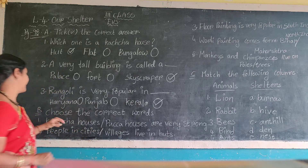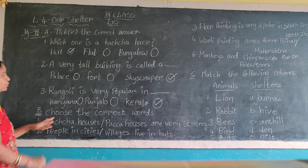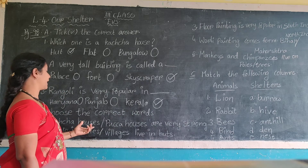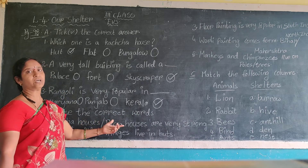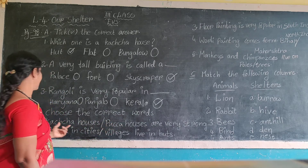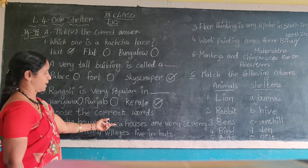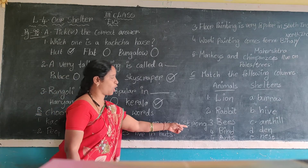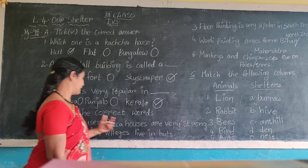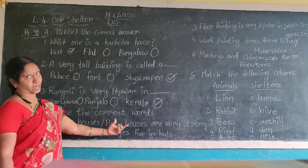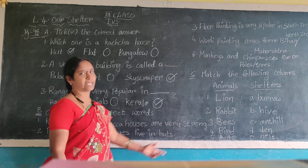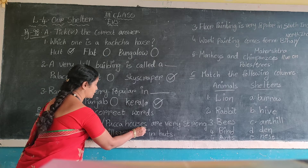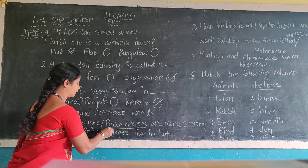Next, section B: choose the correct words. First, pakka houses are very strong or kaccha houses are very strong? The correct answer is pakka houses are very strong.